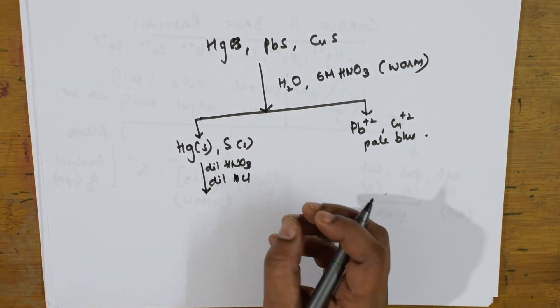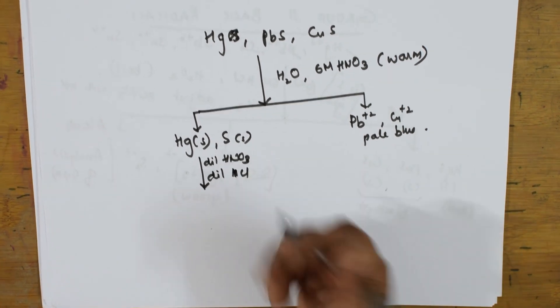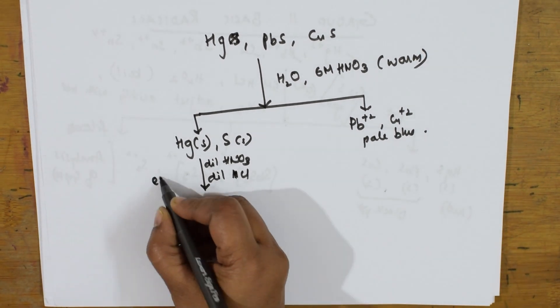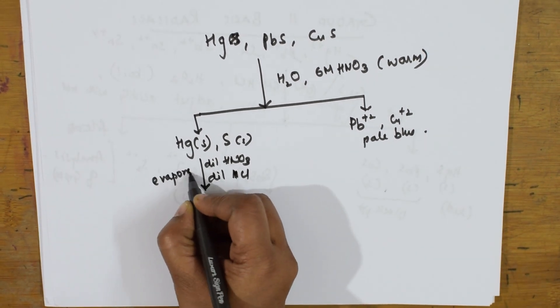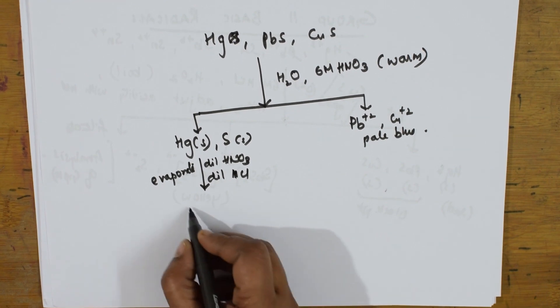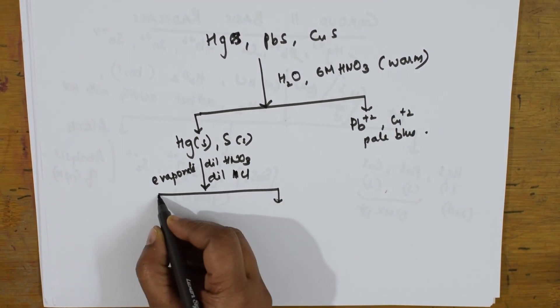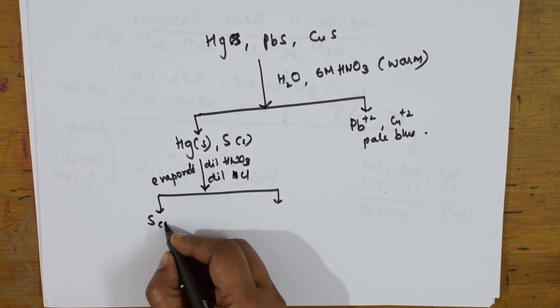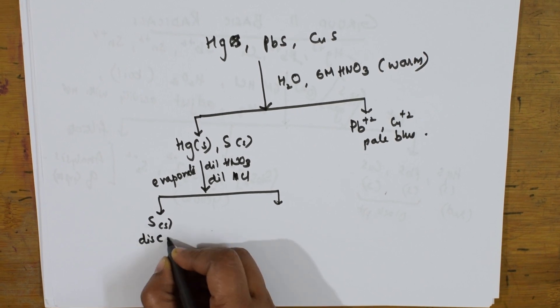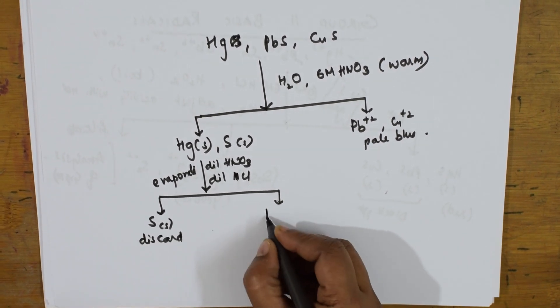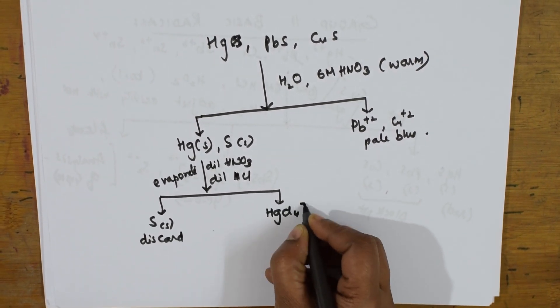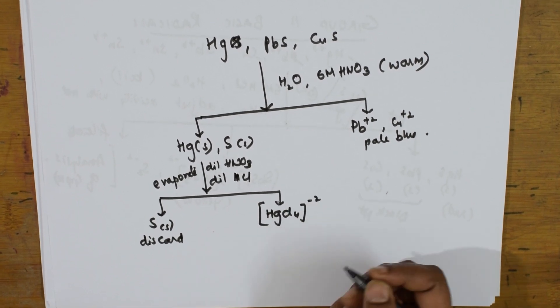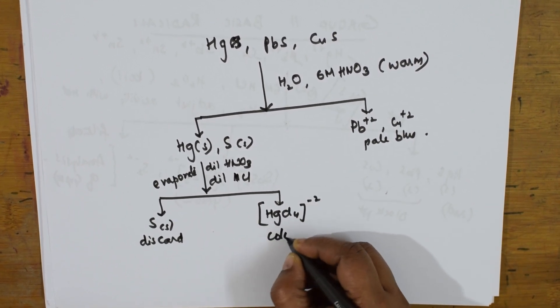Once you add, shake the test tube vigorously, let it evaporate. When you evaporate you will be getting two. What are they? When a sulfide S, discard this, and you'll be getting HgCl₄²⁻. What is this color? This is colorless.